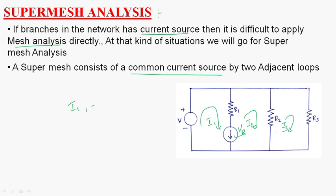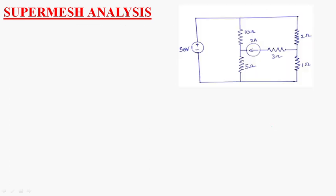Now we will analyze the super mesh analysis by considering this network. Let us consider here this is the super mesh — here a 2A current source is present. This is the super mesh. Let us consider this is loop I1, this is the second loop I2, and the third loop as I3.